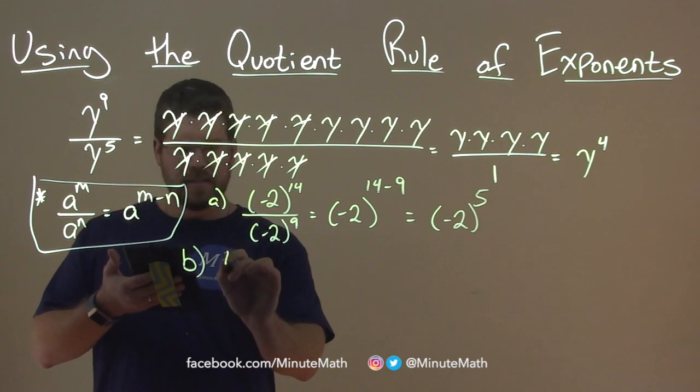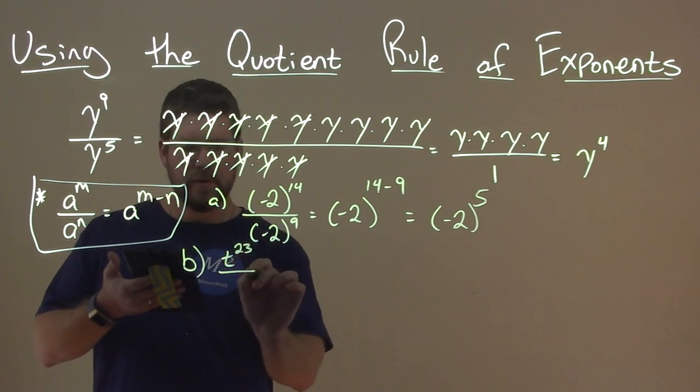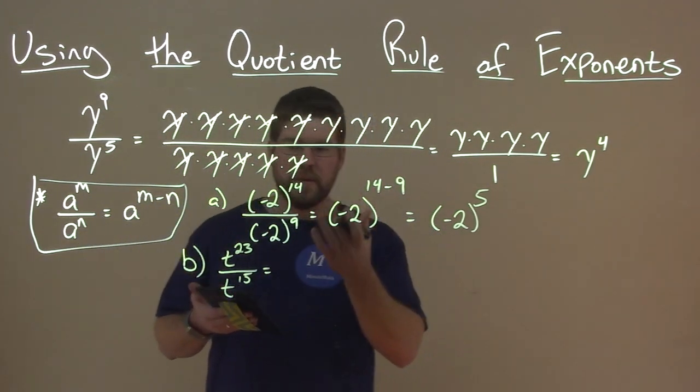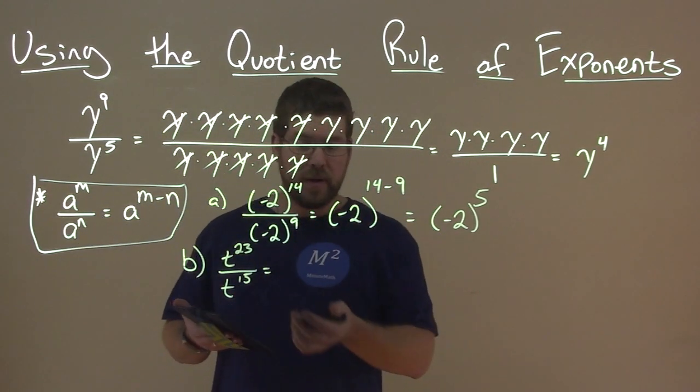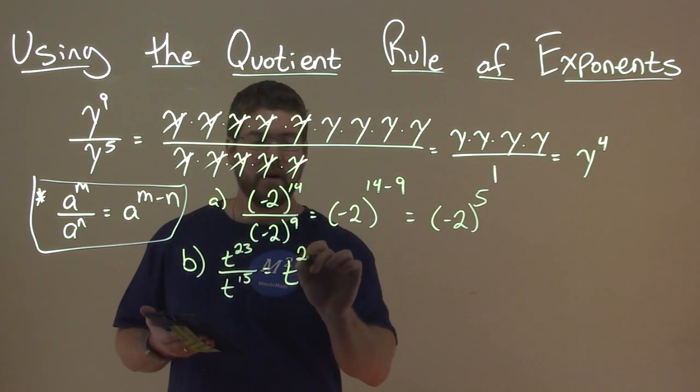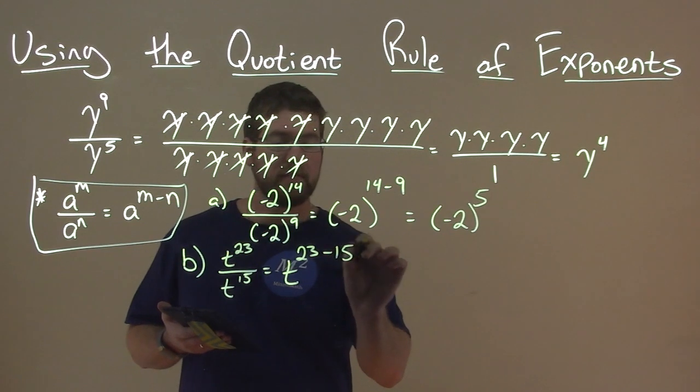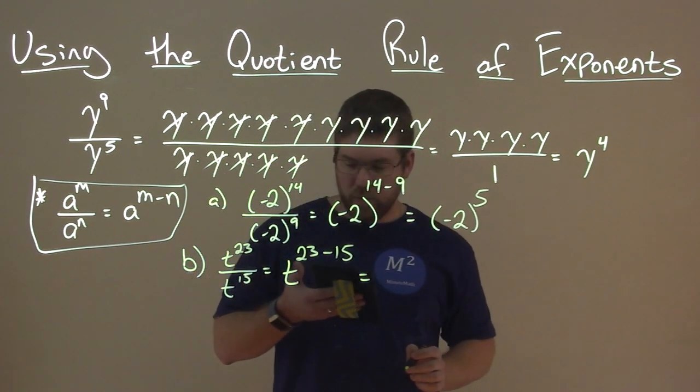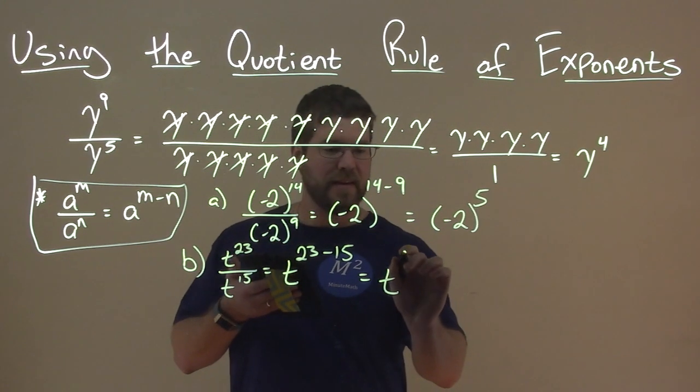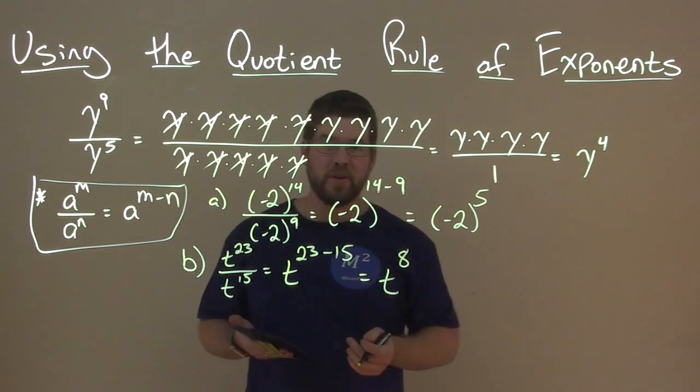Let's try another example. B, we have t to the 23rd power over t to the 15th power. Well, again, quotient rule, we subtract the exponents, right? The bases are the same, so we're good there. And so, we have t to the 23rd minus 15. Well, 23 minus 15 is 8, so we have t to the 8th power. That's a very simplified answer.